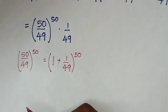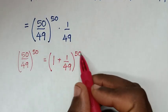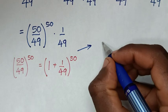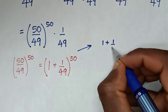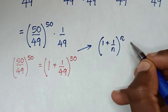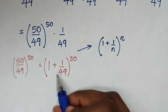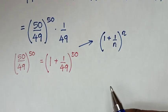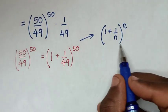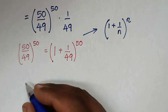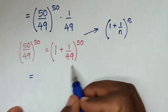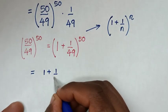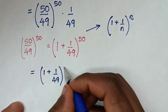Now this is not yet in the standard Euler's form, which is (1 plus 1 over n) bracket power of n. Here n is 49, but the power is 50 — it should be 49. So we need to rewrite it to match this form: (1 plus 1 over 49) bracket power of 49.